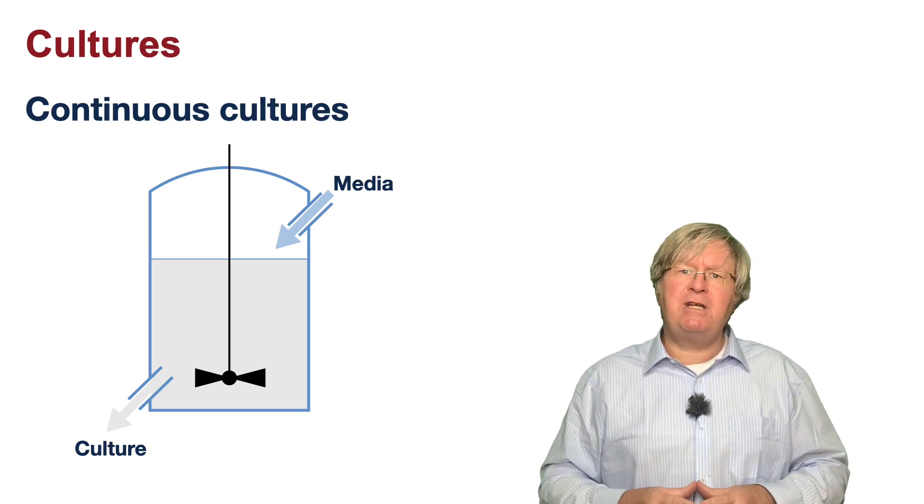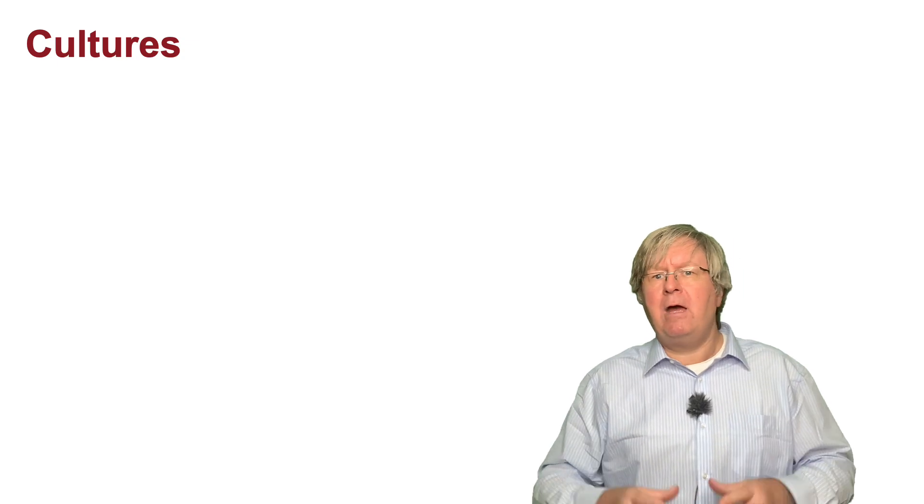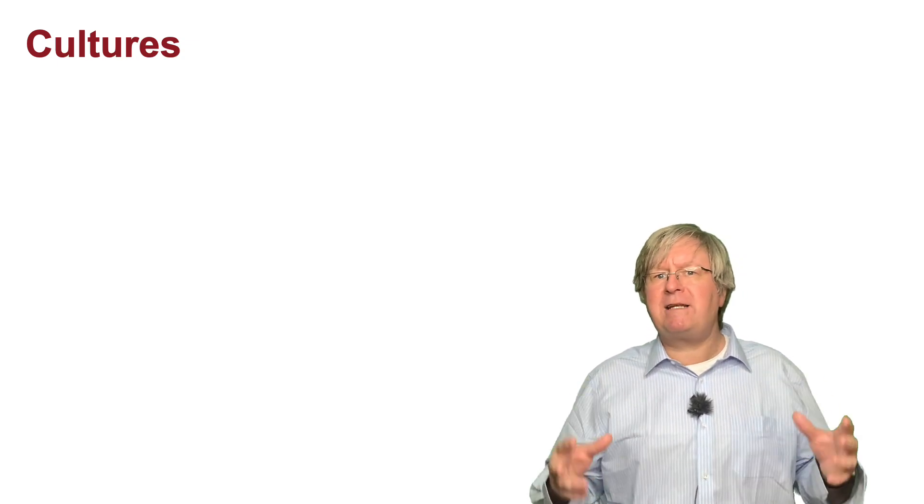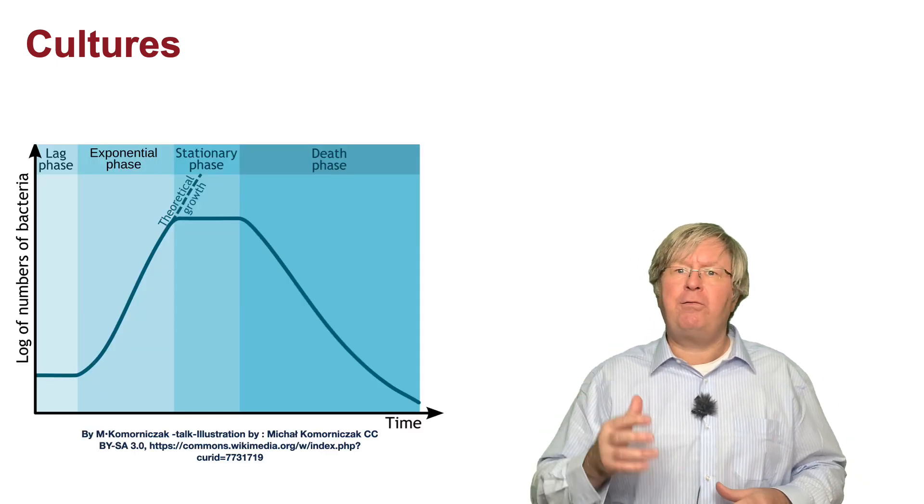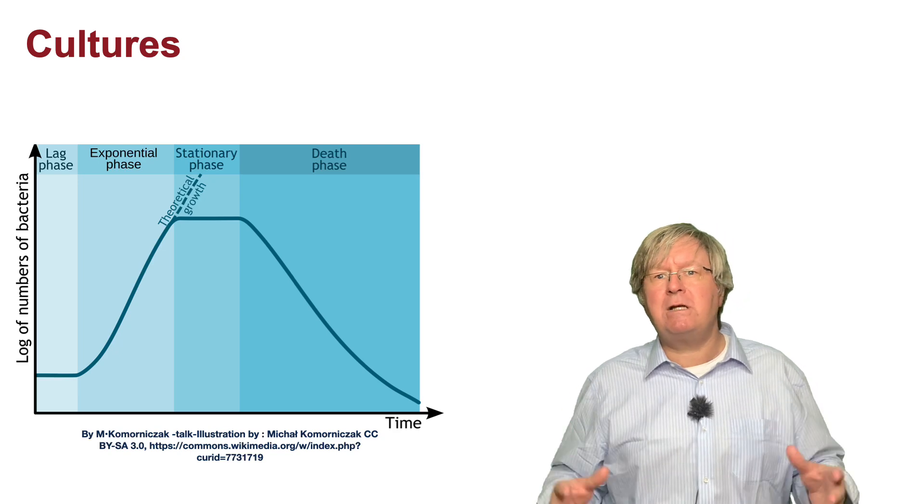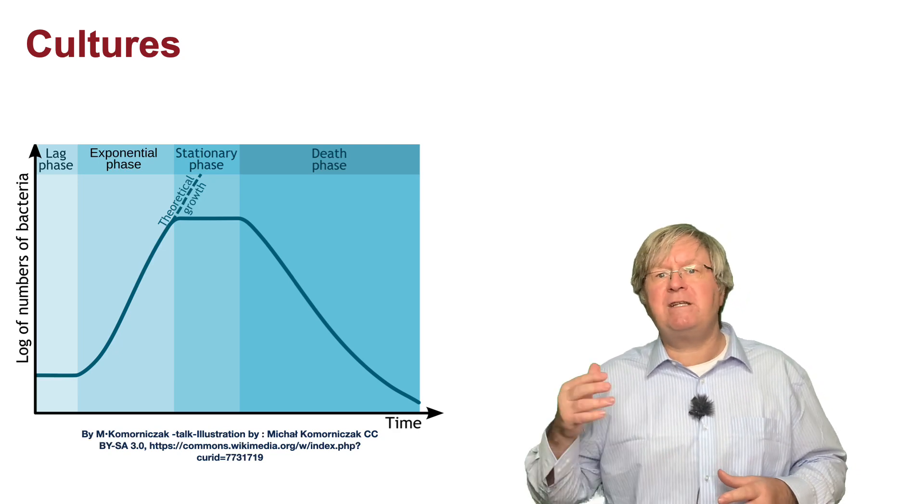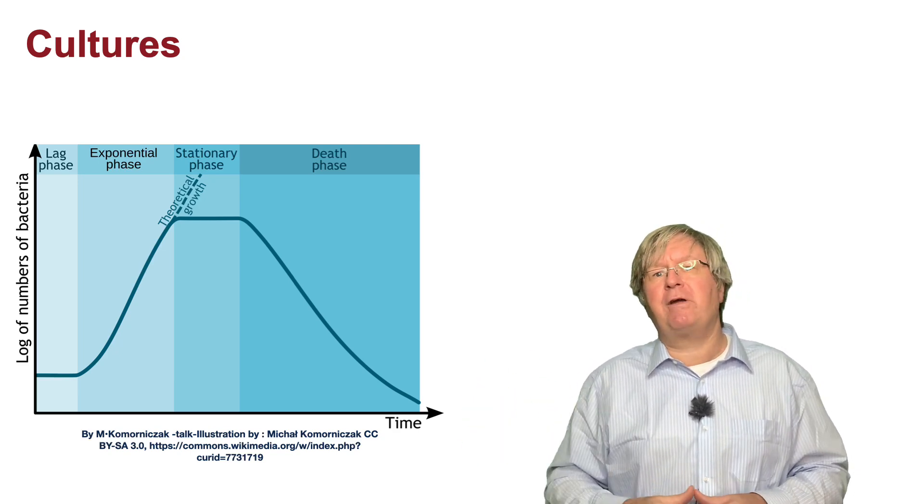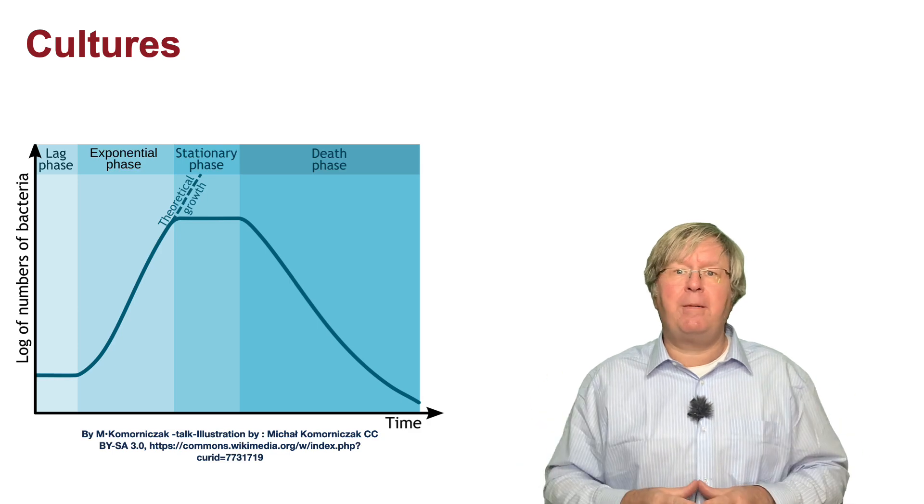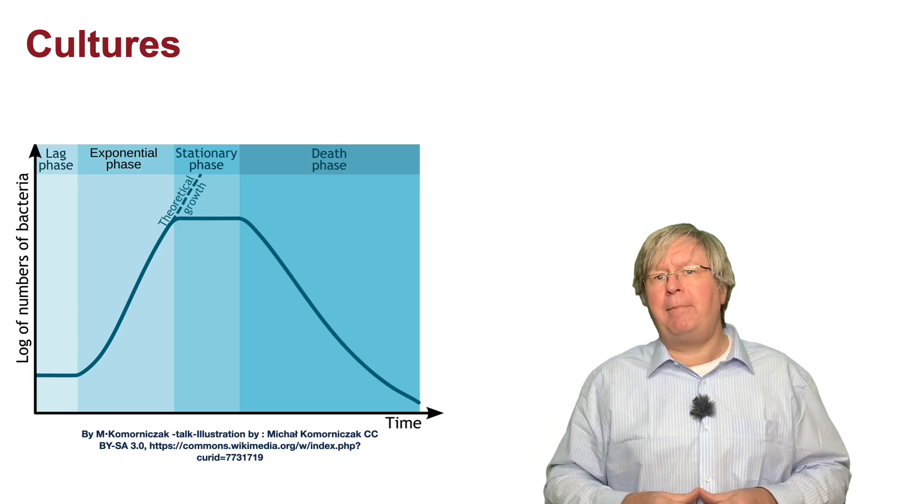However, setting up such a continuous culture can be tricky. If you think back to your bacteria growth curve, if your flow of media into the vessel is too slow, then the cells will move into the stationary and then the death phase of the curve as nutrients become exhausted and harmful metabolites build up.